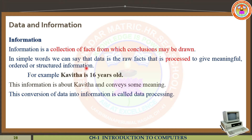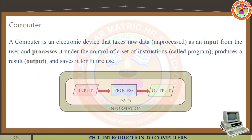This process is known as data processing. This conversion of data into information is called data processing. Data processing means once the data is processed or converted into information, that process is known as data processing. Don't forget. See that diagram now.